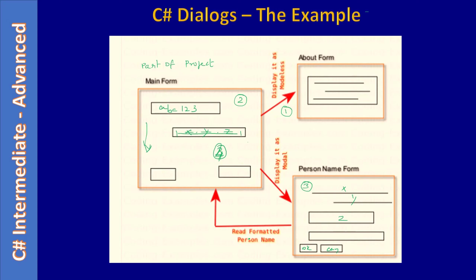We will also learn how to read the formatted person name, and we will learn which button the user pressed — whether they clicked OK or Cancel — based on the dialog return value. For the modeless dialog we use the Show method, and for the modal dialog we use ShowDialog. All of these things we will learn when we start implementing the dialogs.